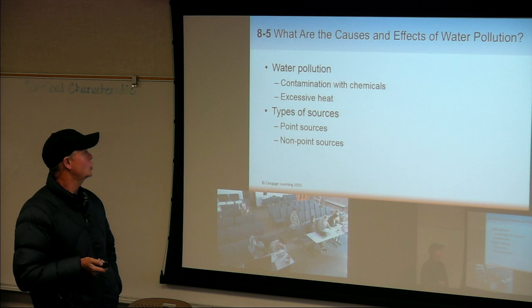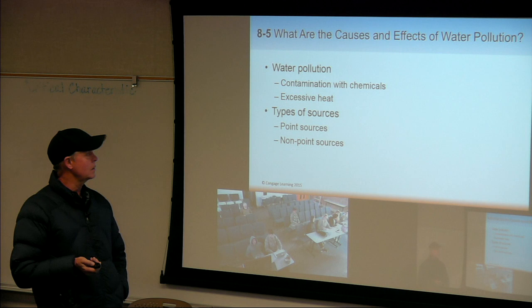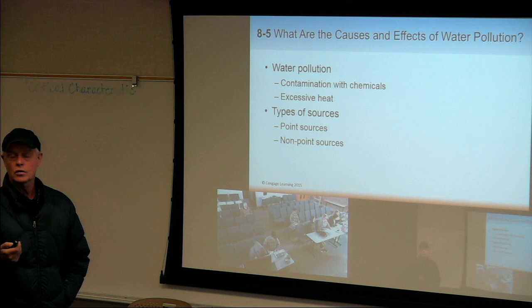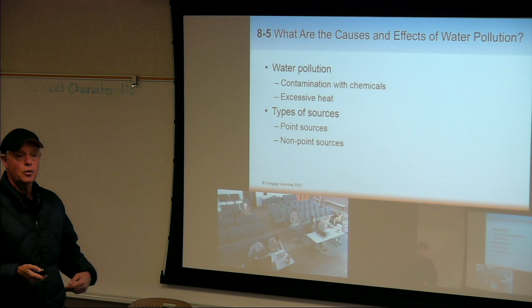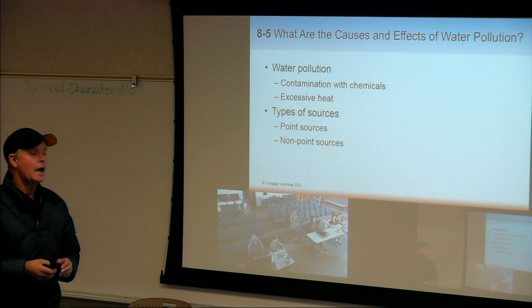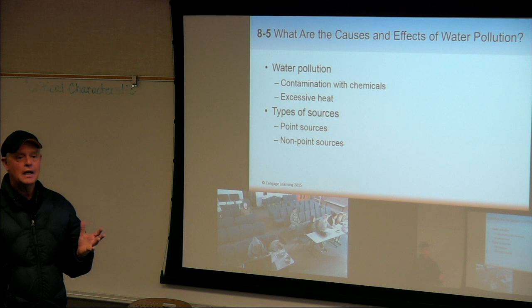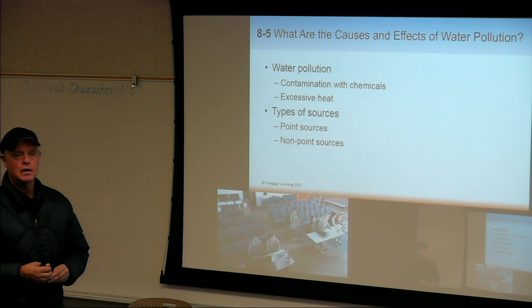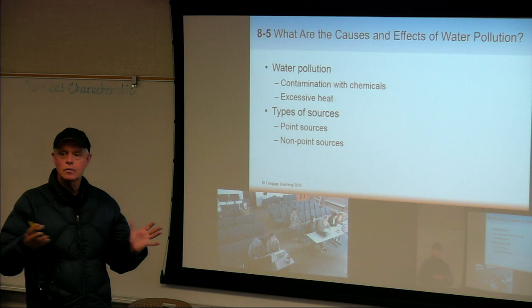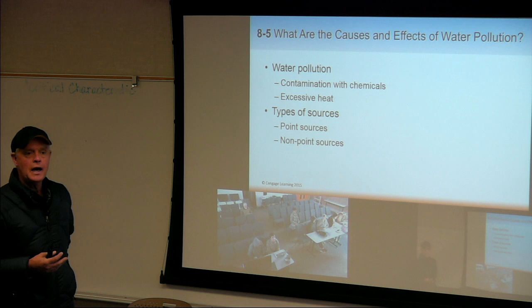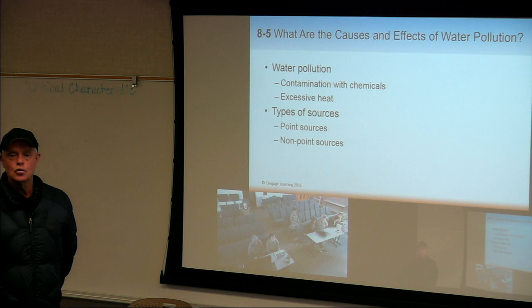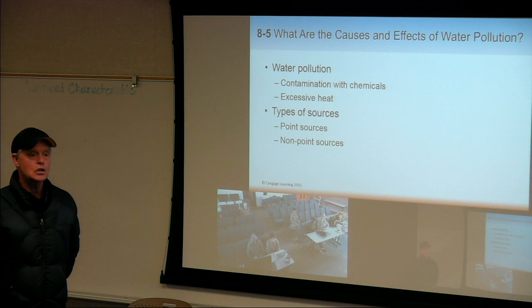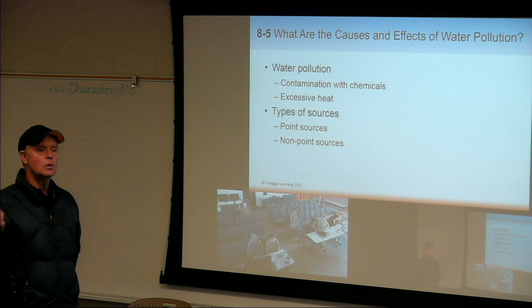Water pollution can be contamination from chemicals, excessive heat from a power plant, bacteria, or human waste. We want to talk about point source and non-point source pollution. Point source points to a specific spot — for example, a chemical factory releasing chemicals directly into a water source. Non-point source is more distributed: if we've got a bunch of farmers farming along the Colorado River, all fertilizing and putting down pesticides, those can wash off. That's a non-point source because you can't point to any particular farmer — it's a whole big region.